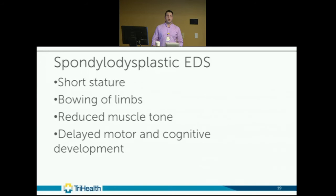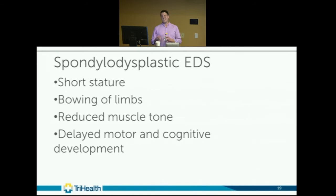Spondylodysplastic EDS overlaps with osteogenesis imperfecta and features short stature, bowing of limbs, and reduced muscle tone — also overlapping with kyphoscoliotic EDS — along with delayed motor and cognitive development. There are three different genetic mutations with varying physical features and exam signs.